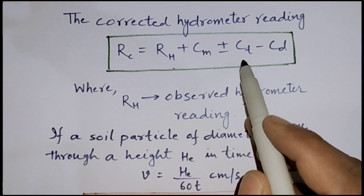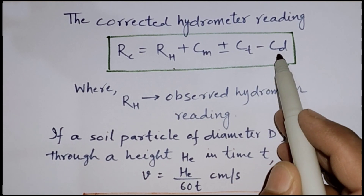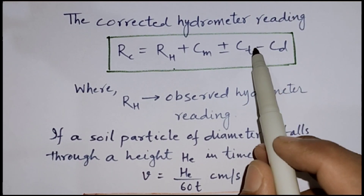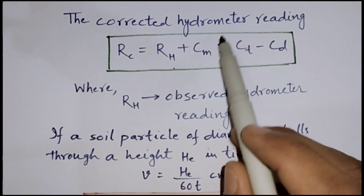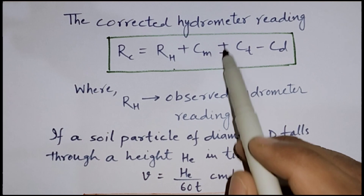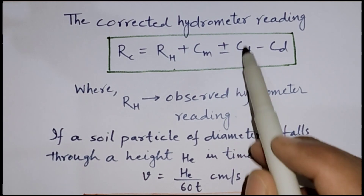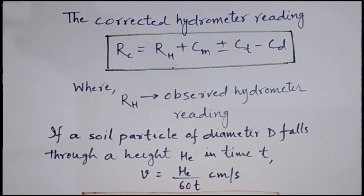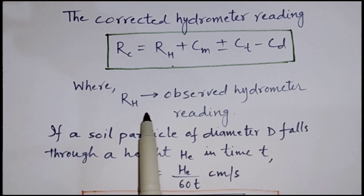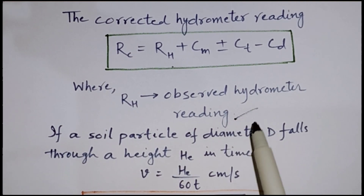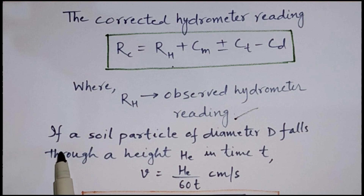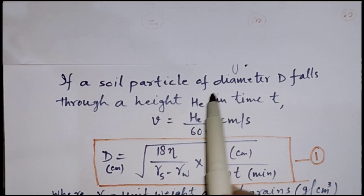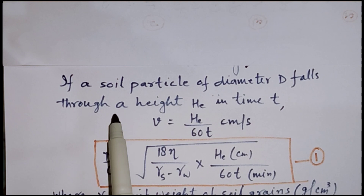Thus, the corrected hydrometer reading RC is equal to RH plus the correction due to meniscus, plus or minus CT for temperature correction, minus CD for the dispersing agent correction. Since CD is always negative, it is subtracted, while CT may be positive or negative depending on the temperature.